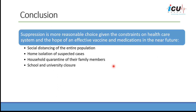In conclusion, the suppression strategy is the more reasonable choice given the constraints on the health care system and the hope of an effective vaccine and medications in the near future. This strategy should include social distancing of the entire population, home isolation of suspected cases, household quarantine of their family members, and school and university closure. This is what has been done in the United States. Thank you very much.